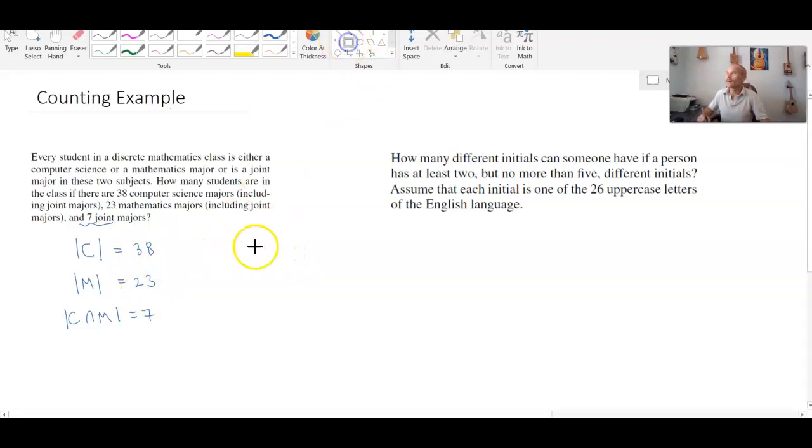These seven are going to be jointly split between C and M. So one thing I can do here to help me better visualize this is create a little Venn diagram, and in this Venn diagram I will put two circles, one representing C and one representing M.